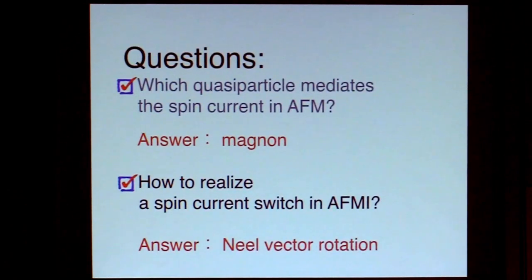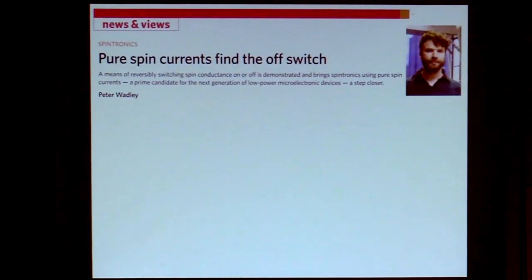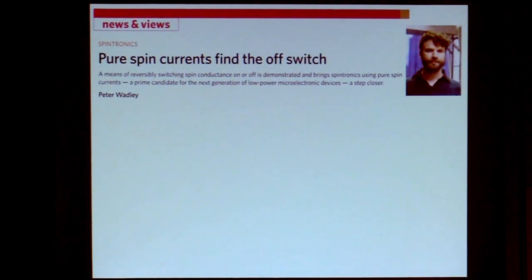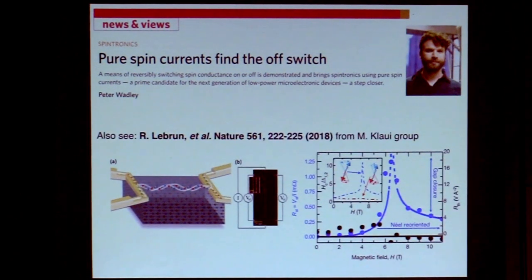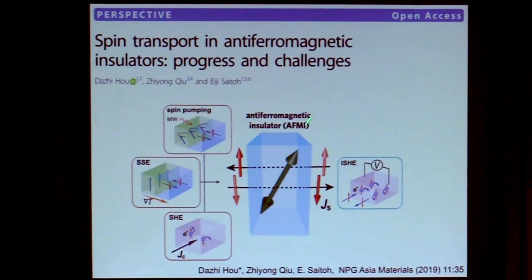I hope I have convinced you that spin current switching can be realized by Néel vector rotation in antiferromagnet insulators. Thanks to Peter for writing an introduction to our paper in the same issue of the Nature Materials journal. A very similar result was reported by the CLOID group one or two months after our publication. We also have a perspective published recently that you can read for further information.